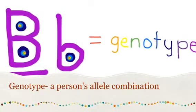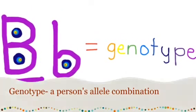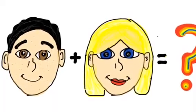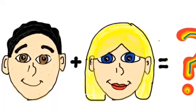A person's combination of alleles is called their genotype. Half of a person's genotype comes from their mother and the other half comes from their father.